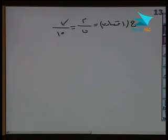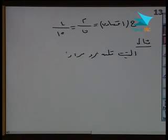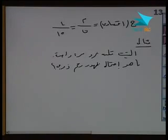طيب نشوف مثال تاني. المثال بيقول إيه؟ بيقول: القِ قطعة نرد مرة واحدة. ما هو احتمال ظهور رقم زوجي؟ ألقِ قطعة نرد وبسأل احتمال ظهور رقم زوجي.